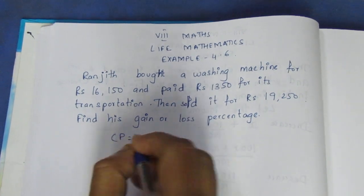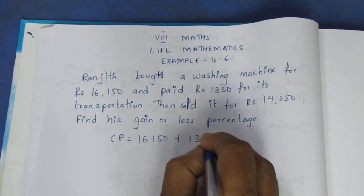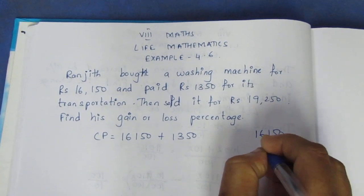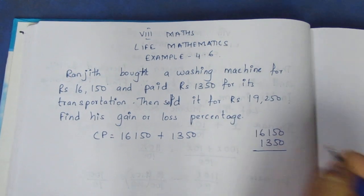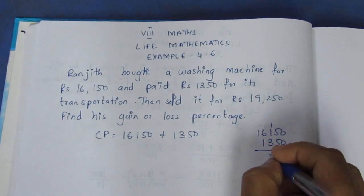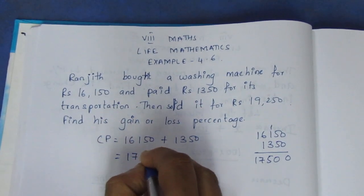So how do we get the CP? 16,150 plus 1,350. Let's add 16,150 plus 1,350. 0, 5 plus 5 is 10, carry 1. So 5, 7, 1. Cost price is 17,500.